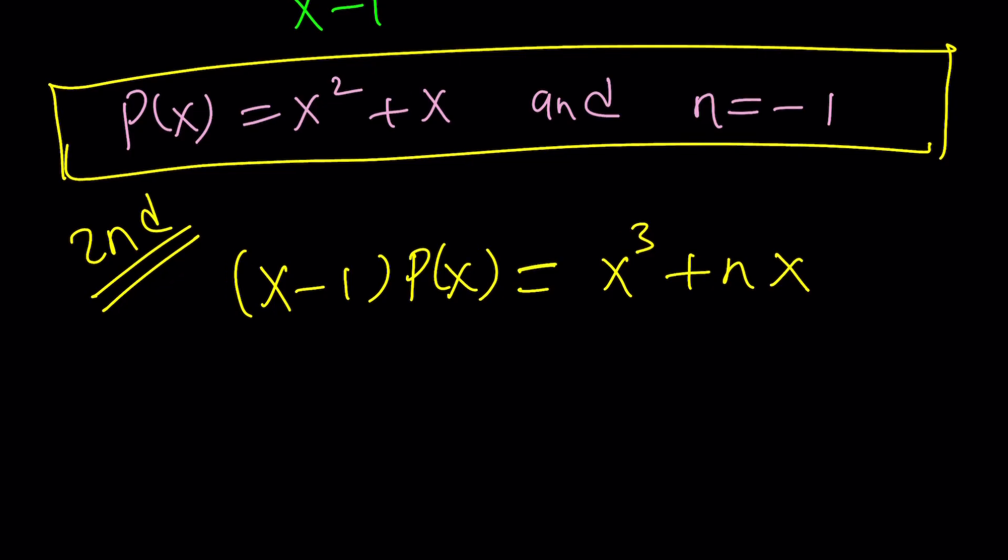Anyways, so let's go ahead and see how we can find the n instantaneously. You know how? Here's the thing. Since p of x is a polynomial, p of x multiplied by x minus 1 is a polynomial. So both sides are polynomials. How nice is that?